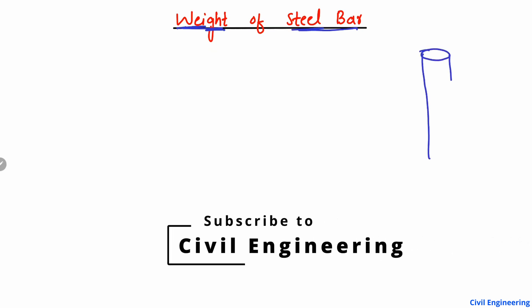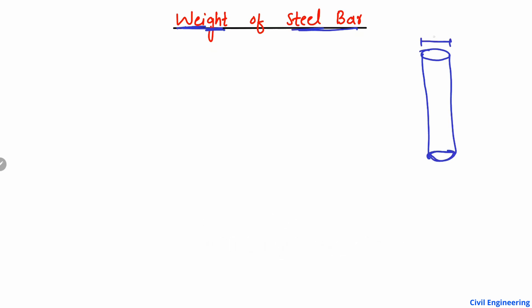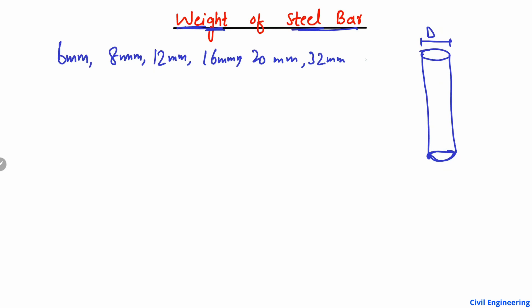For example, we have different kinds of steel bar. This is just one example of a steel bar, and this is the diameter — I call it D. We have different diameters of steel bar, starting from 6 millimeter, 8 millimeter, 12 millimeter, 16 millimeter, 20 millimeter, 32 millimeter, 36, and also 40 millimeter diameter of bar.